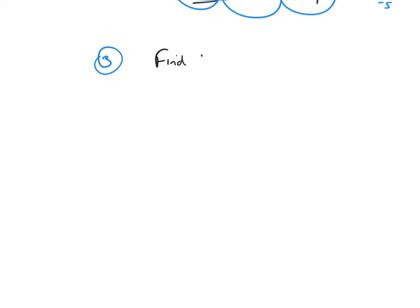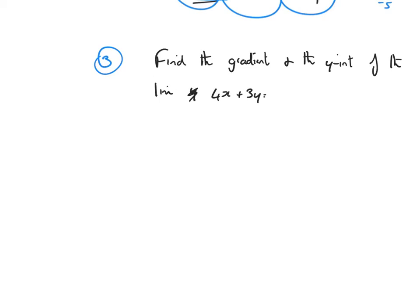Example 3 — changing it up and looking at something a bit different. This time we're going to find the gradient and the y-intercept. To find both of those, you must have the straight line in the form y equals mx plus c. The line given is 4x plus 3y equals 2.